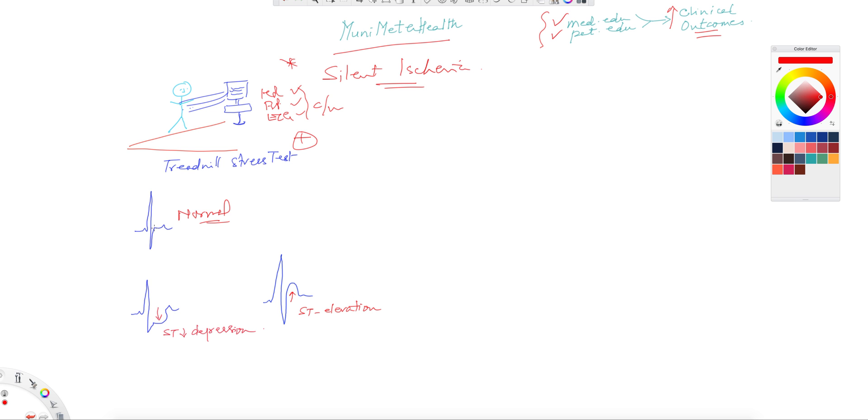The ST segment is right here. Remember, the P, the QRS, and the ST segment depression that occurs here, and this is your T wave. This is for the sake of the students. ST depression is almost like you could fill up some water in this cup here. That's ST depression.